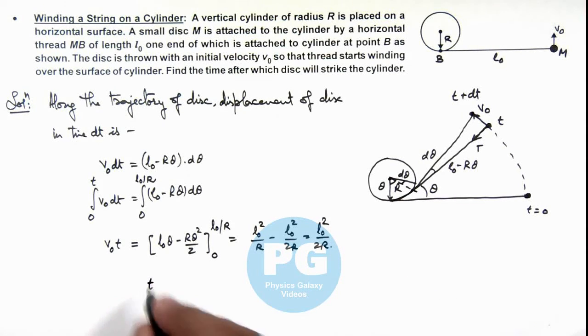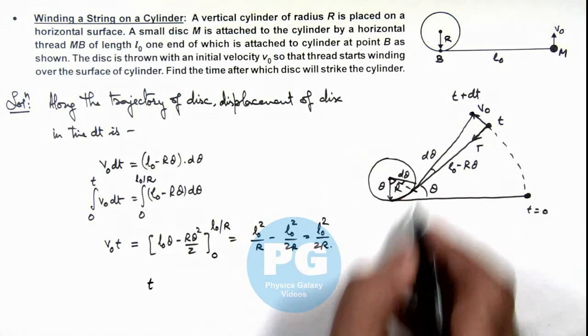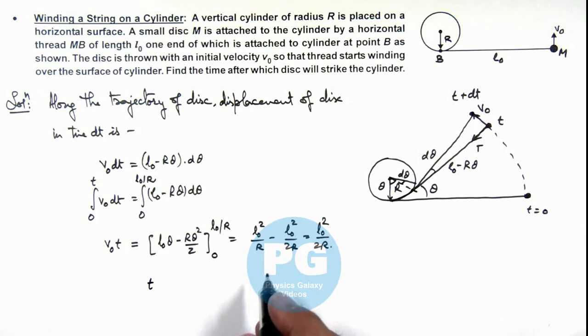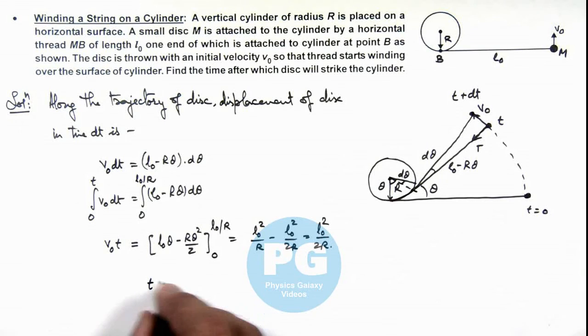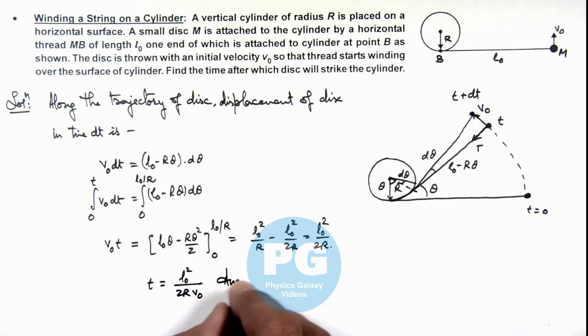So here the time after which this disc will strike the cylindrical surface, or the string will completely wind on the cylindrical surface, is given as L₀²/(2Rv₀). That will be the final result of this problem.